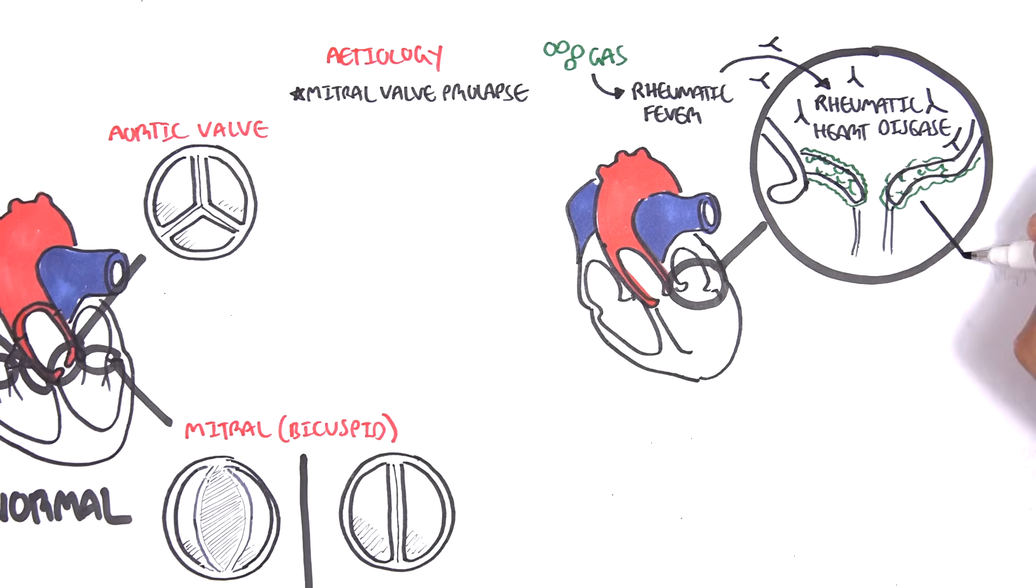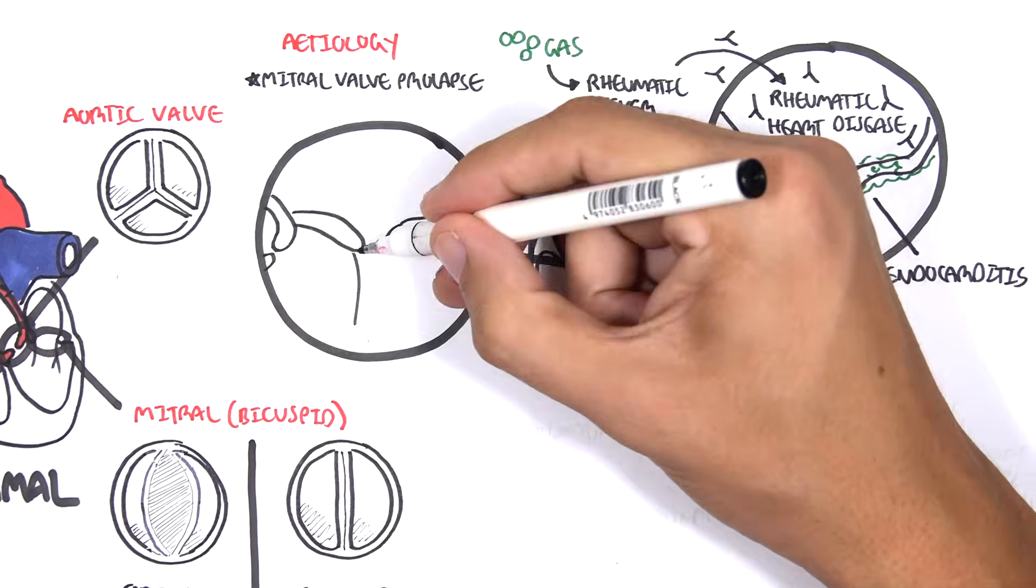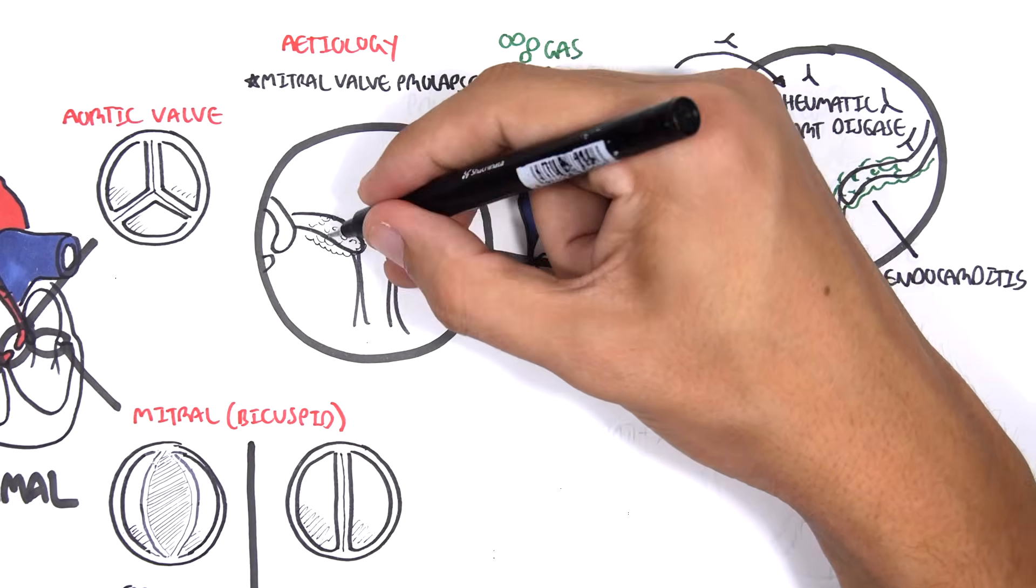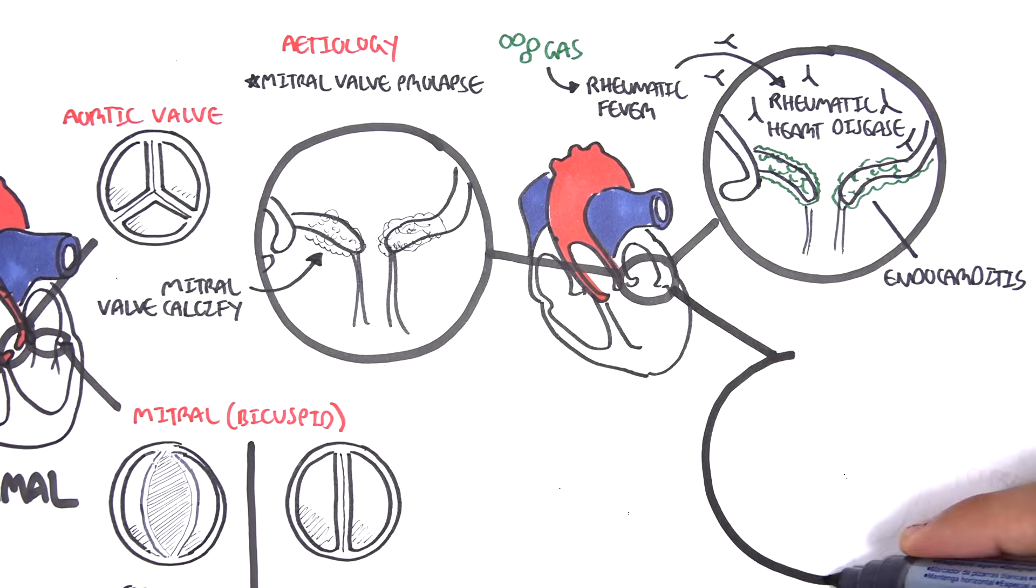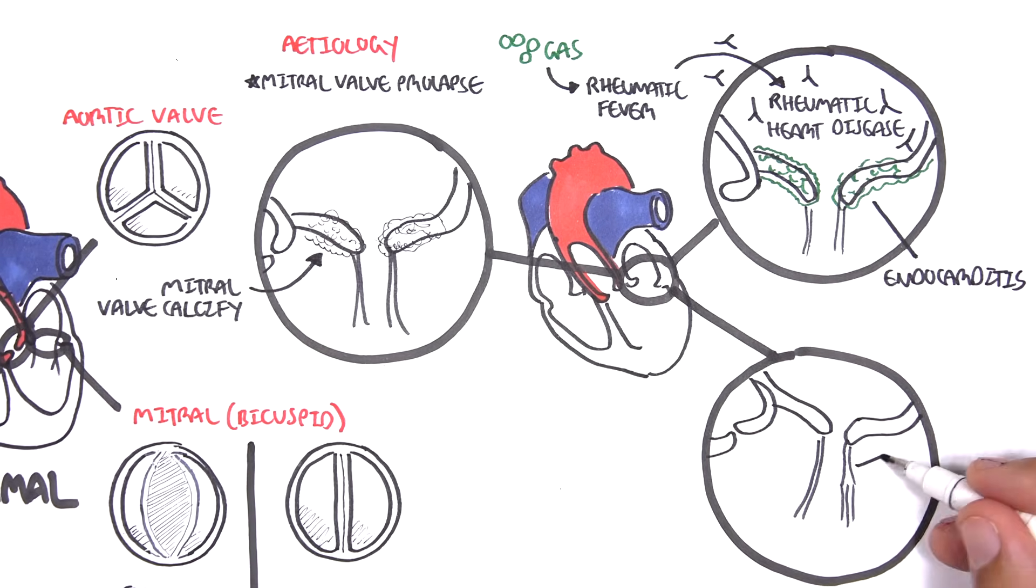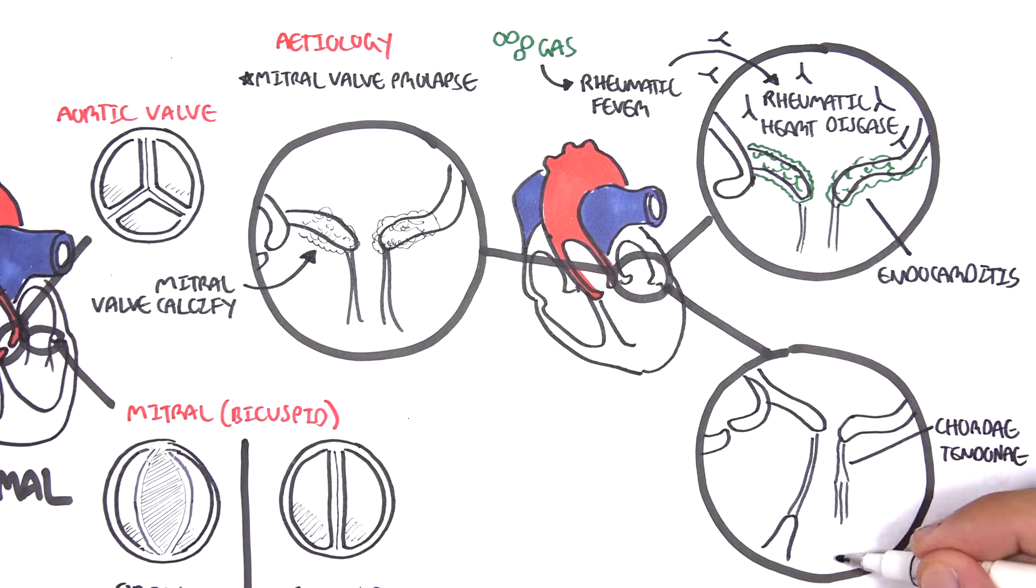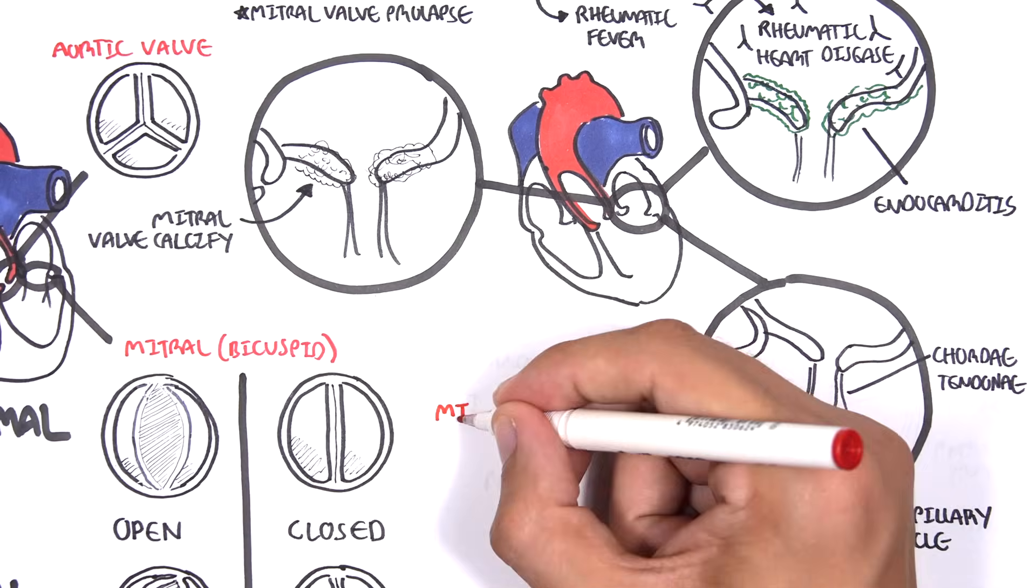Endocarditis can cause mitral regurgitation. Mitral valve calcification with age can also cause mitral regurgitation. Here I am drawing the chordae tendineae and papillary muscles, which are structures that play a role in closing and opening the valves of the heart.